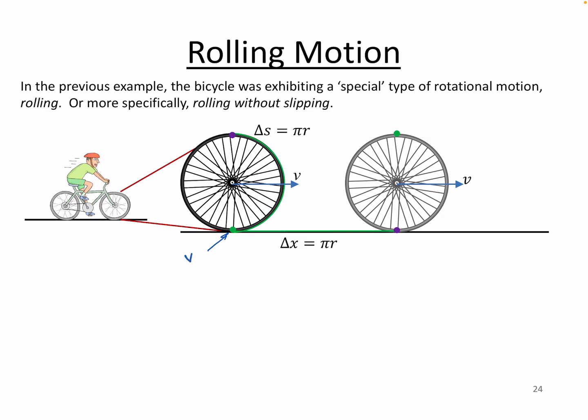There's enough static friction between the tire and the surface to make that contact point instantaneously have zero velocity, and then it rolls, and the very next point has zero velocity relative to the ground, and so on. That's rolling without slipping.